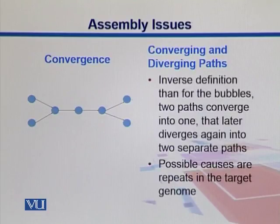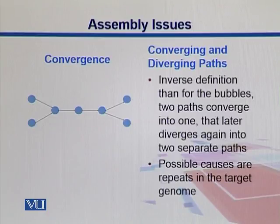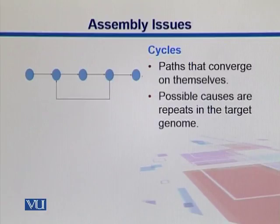Converging and diverging paths are the inverse definition of bubbles — two paths converge into one and then later on they again split. That may be because of the repeats in the target genome. Cycles are observed if the paths converge on themselves, and that may also arise because of the repeats.